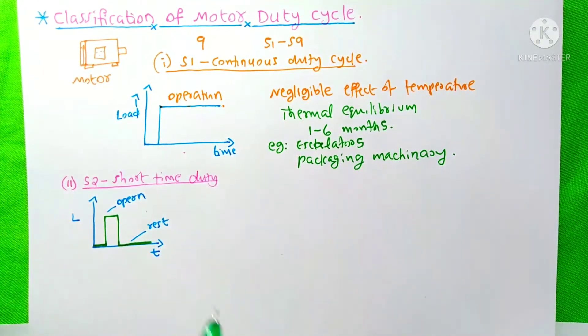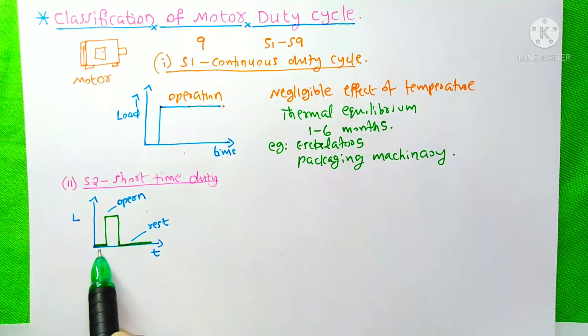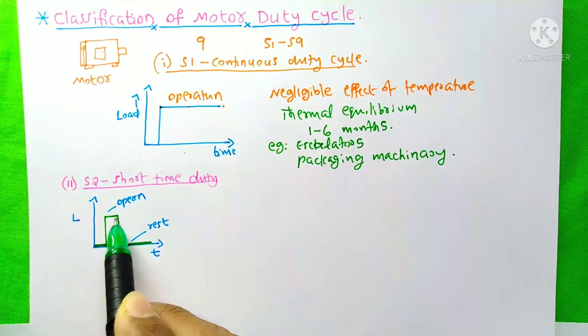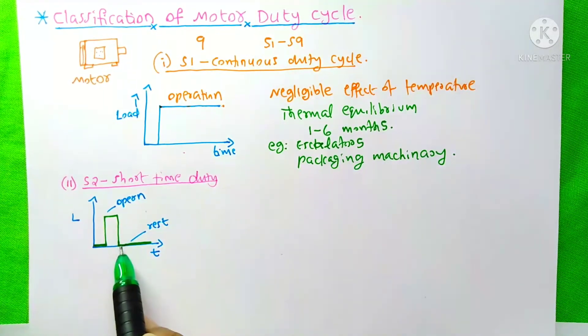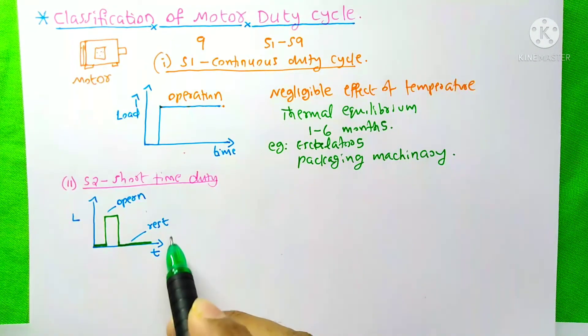The second duty cycle is short time duty. Here you can see, after the motor starts, when it reaches its maximum load, then it will be on for a short time. It is the operation time. And after that, the motor will be switched off and it will be on rest for a long time.